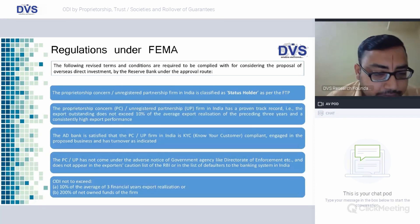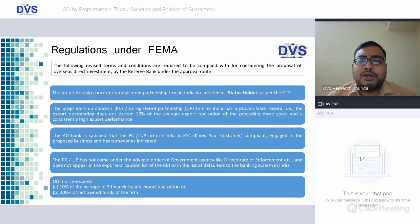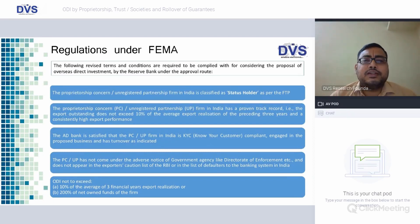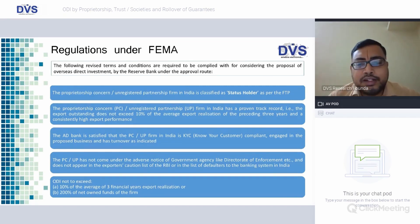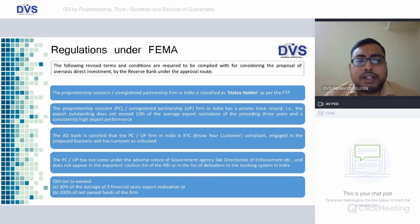The next condition is that the proprietary concern or unregistered partnership firm should not have come under the adverse notice of government agencies. This condition is common across all regulations — Regulation 6, Regulation 7, and Schedule 5 as well. The applicant should not have any negative remark or black mark on its profile, and should not be under investigation for financial fraud by any agency — whether the ED, CBI, or any other authority.